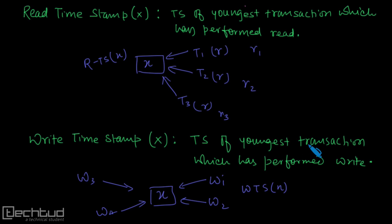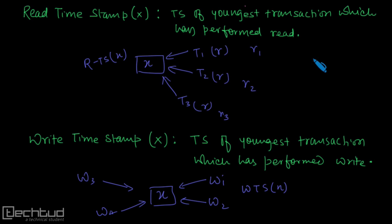Since this is the timestamp of the youngest transaction, and the youngest transaction will have the largest timestamp value — to understand this, consider variable X where transaction T1 comes first.